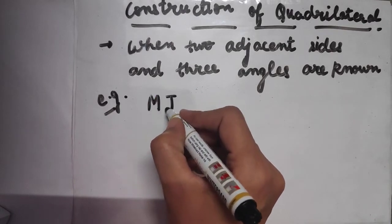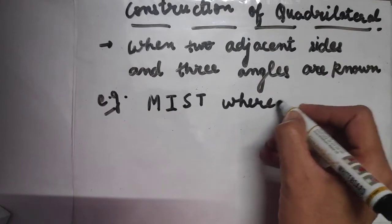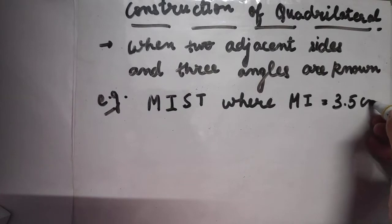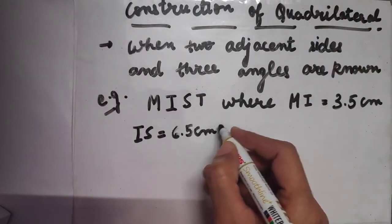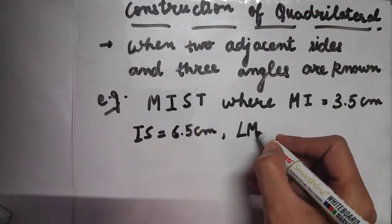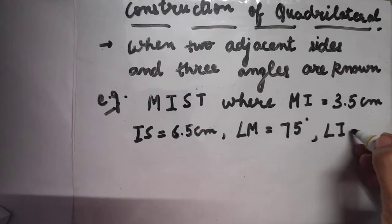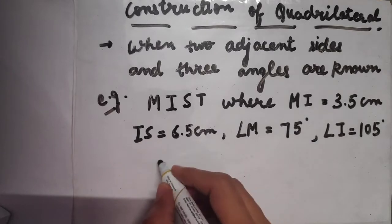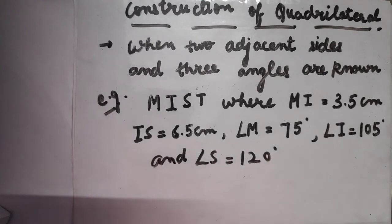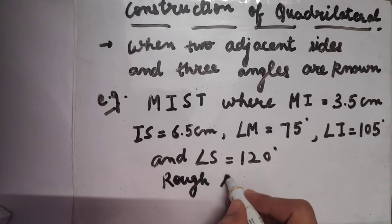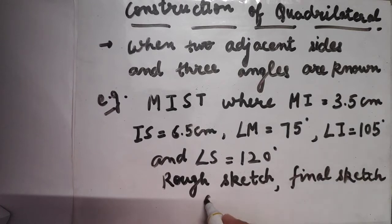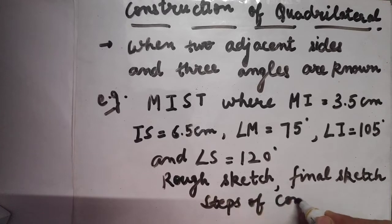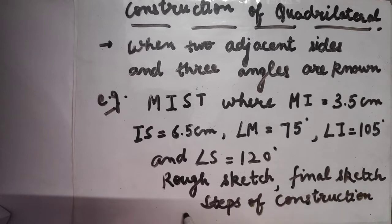After that we shall discuss exercise 4.3 questions. The example is: construct a quadrilateral MIST where MI = 3.5 cm, IS = 6.5 cm, angle M = 75°, angle I = 105°, and angle S = 120°. The first step is to make a rough sketch, then the final sketch, and lastly write the steps of construction. These are the steps to follow in practical geometry questions.